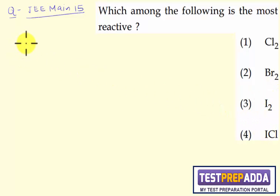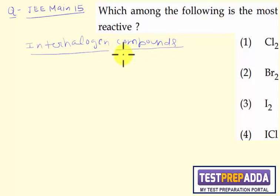Keep in mind interhalogen compounds are more reactive than halogens except fluorine. Except fluorine due to the weak bond or because of more polarity.